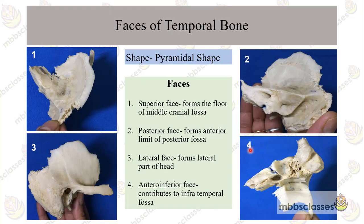The different parts of the temporal bone form different faces. The superior face forms the floor of the middle cranial fossa. The posterior face forms the anterolateral limit of the posterior cranial fossa. The lateral face forms the lateral part of the head, and the anterior inferior part contributes to the infratemporal fossa. So if any disease of the temporal bone extends beyond the temporal region, it may involve the middle cranial fossa, posterior fossa, and infratemporal fossa — which is why it is very important to know the anatomy and how to read the CT scan.